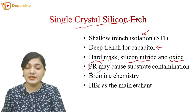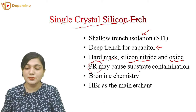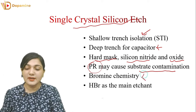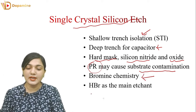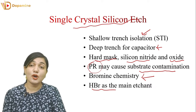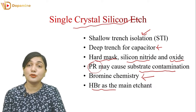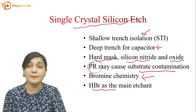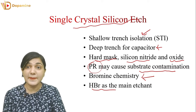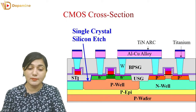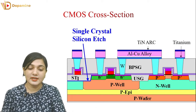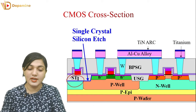For photoresist, we may be contaminated on the substrate. We use bromine chemistry and HBr as the main etchant. When we do dielectric etching, we use fluorine chemistry, but for single crystal silicon etching, we use bromine chemistry. So first of all, let's look at single crystal silicon etching for shallow trench isolation.